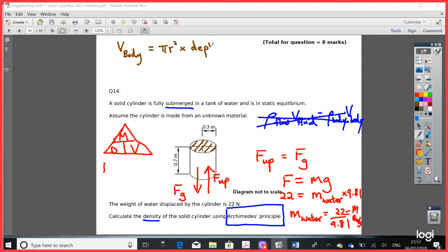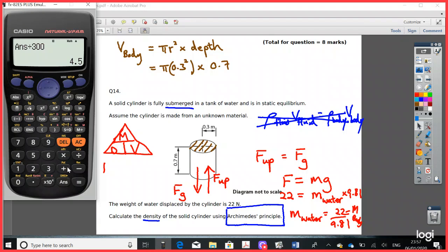So π times 0.3 squared and then times by 0.7. So put that in the calculator. What we'll get is...